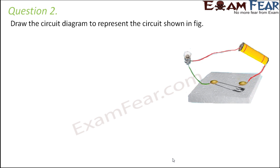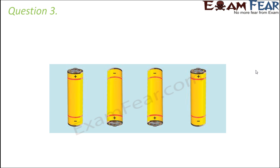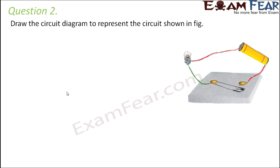Question number two: Draw the circuit diagram to represent the circuit as shown in the figure. In this circuit you have wires, a bulb, and a battery, all connected with the help of a safety pin. When the safety pin is connected, current will flow; when it is not connected, current will not flow. So when you draw this, instead of the actual bulb you draw the standard symbol for bulb, and a switch represents the action being done by the safety pin.